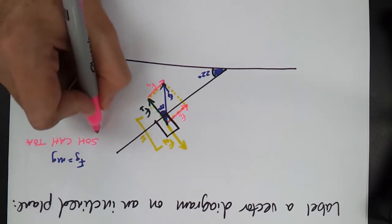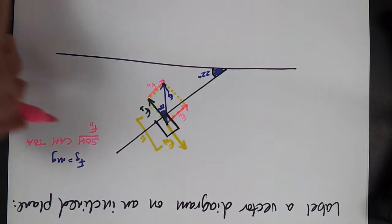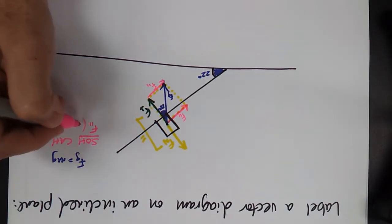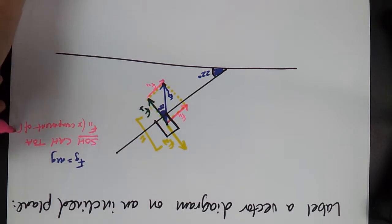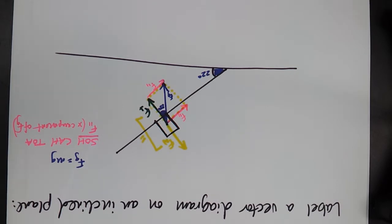So in order to use the SOH part, it's going to be F parallel. Remember, F parallel then is the X component of Fg. That's really what it is. It's the X component of Fg. Then we look at SOHCAHTOA again.